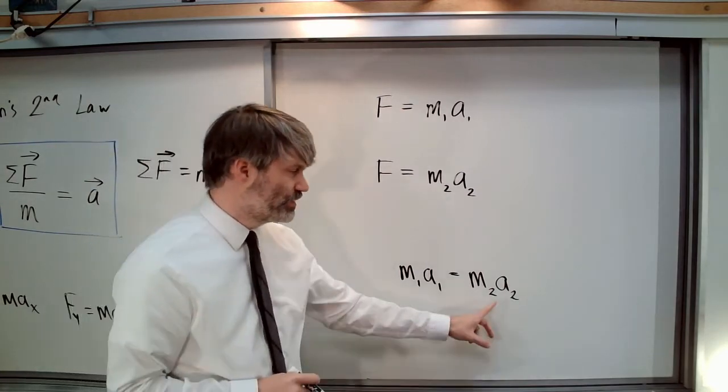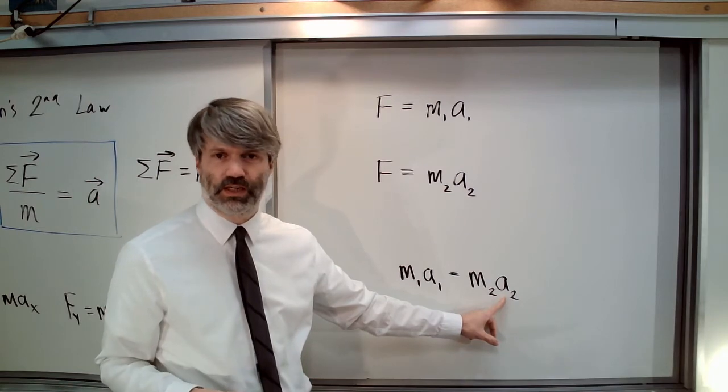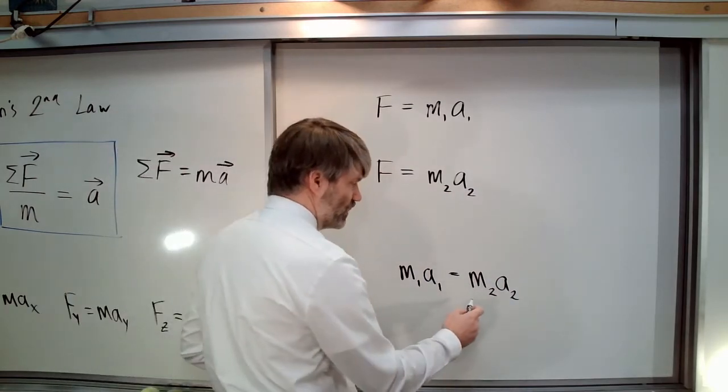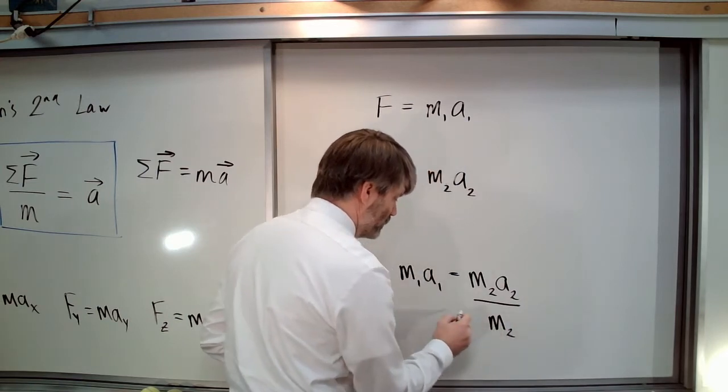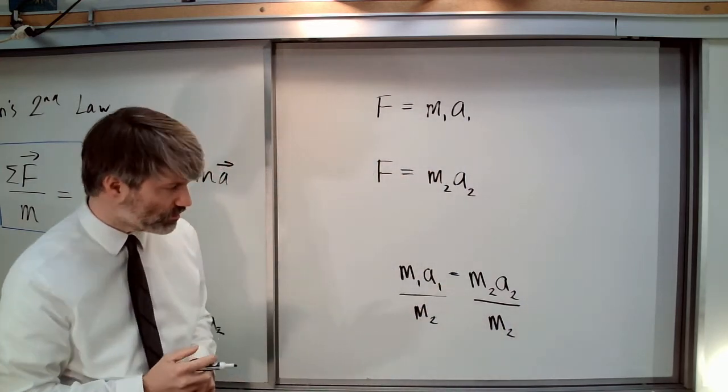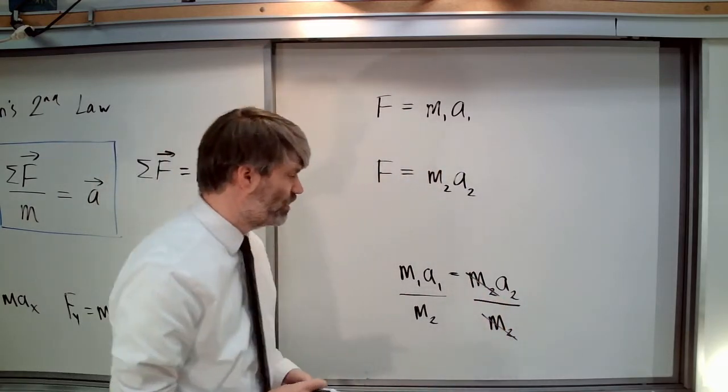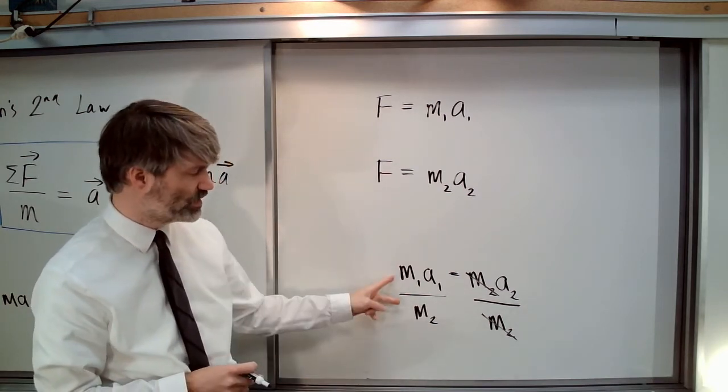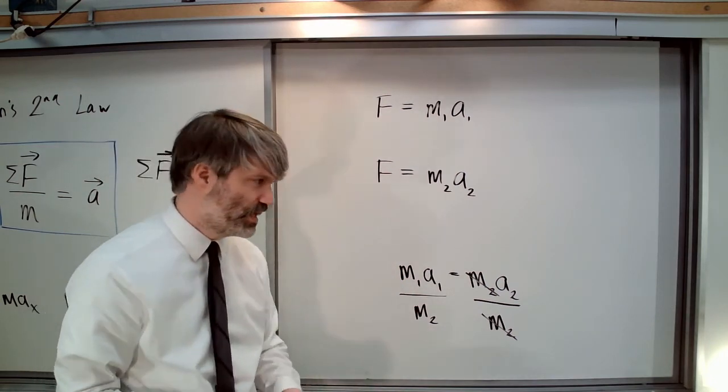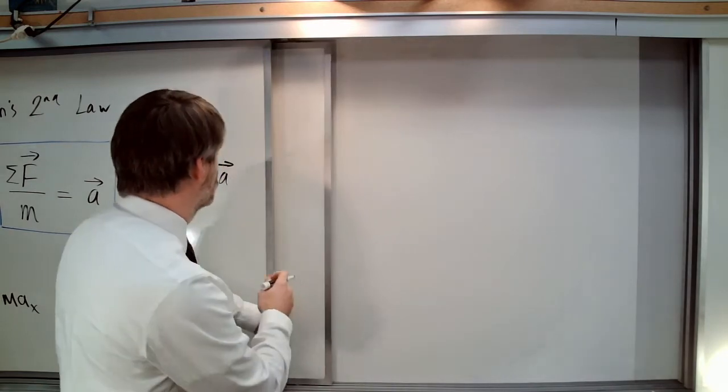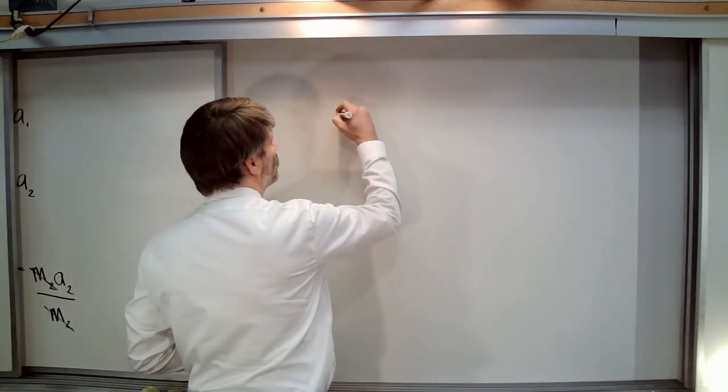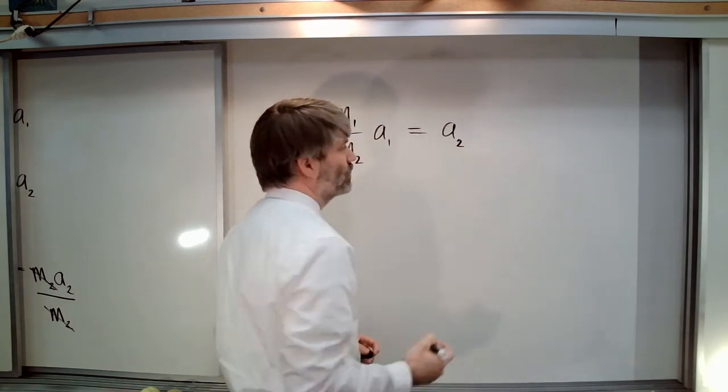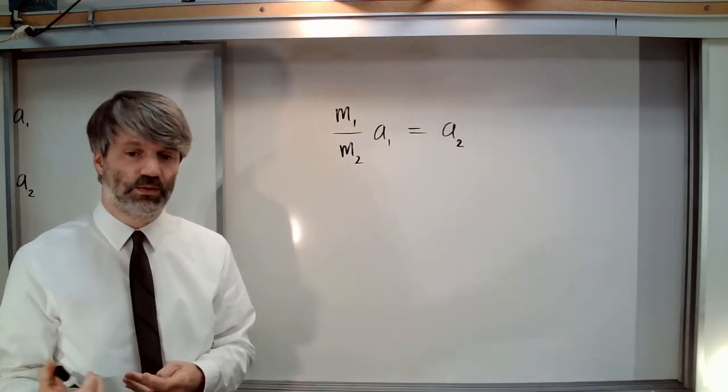What we're searching for is A2, the acceleration of the second object. If we're going to get A2 isolated, we divide both sides by M2. This is not the most convenient way to write this to see the concept involved. I'm going to isolate the M1 and M2 from the A, so (M1/M2) times A1 equals A2.